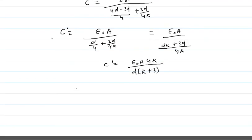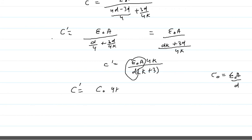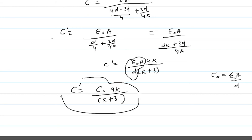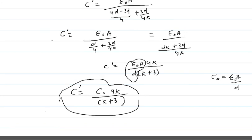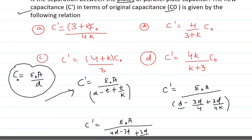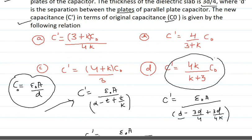We need to express C' in terms of C naught. Since C naught equals epsilon naught A by d, we substitute to get: C' equals C naught times 4K divided by (K plus 3). So the final answer is C' equals 4K times C naught upon (K plus 3). Option D is the correct answer: 4KC naught upon (K plus 3).